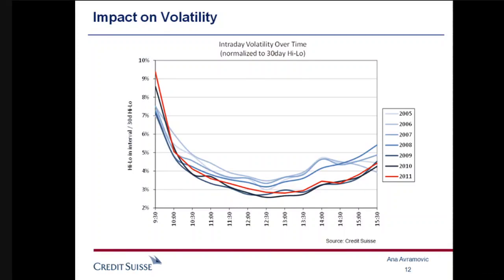Another way of looking at volatility is intraday volatility. We've had to adjust by the overall baseline level of volatility in the markets, because as you have the general level of volatility higher, naturally your intraday volatility is also going to be higher. Once we adjust for that, we see that every single year it's been coming down consistently over time.